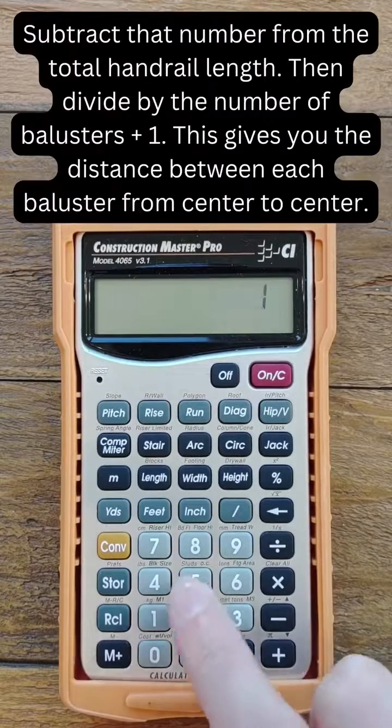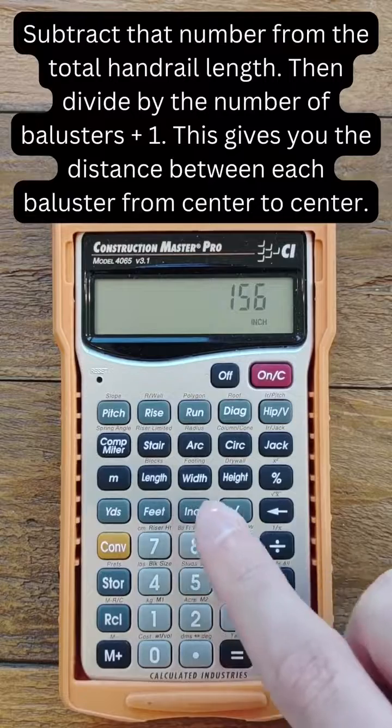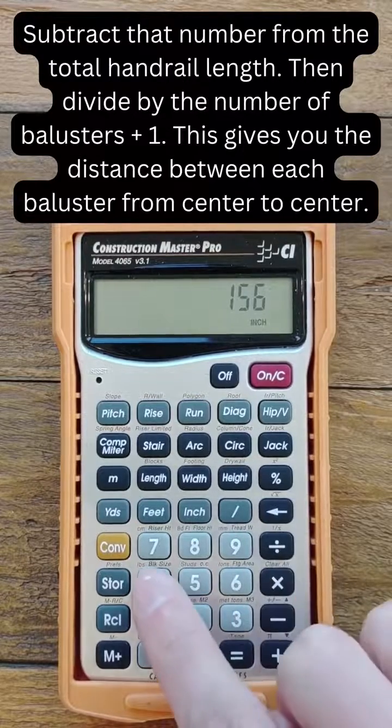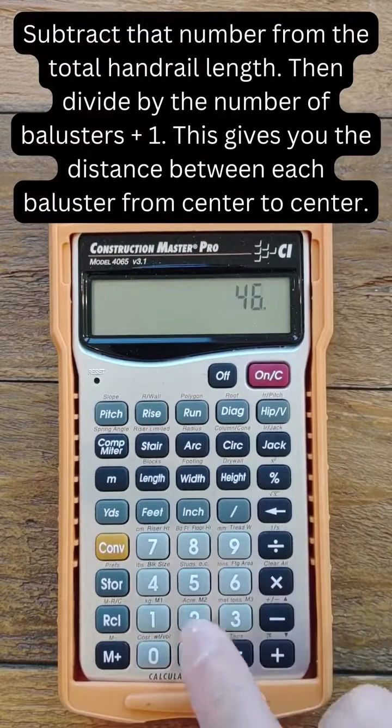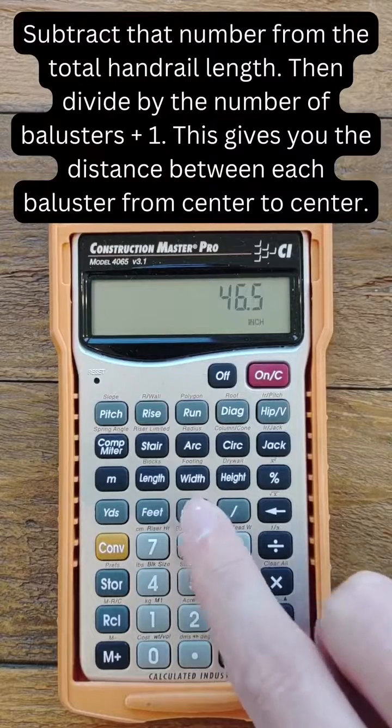Next, we subtract that number from the total handrail length and divide by the number of balusters plus one. This gives us the distance between each baluster from center to center.